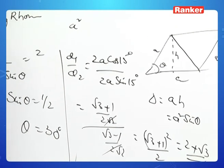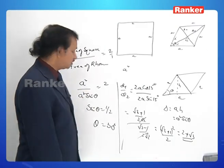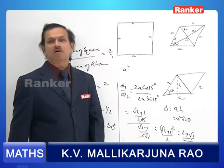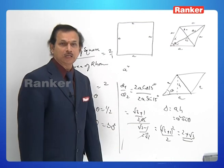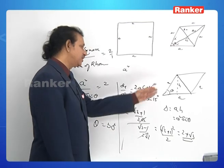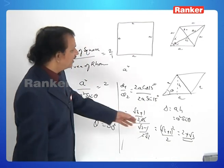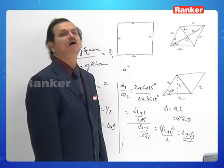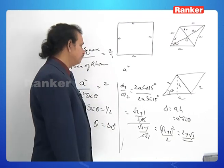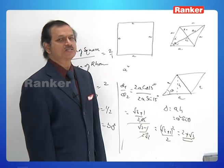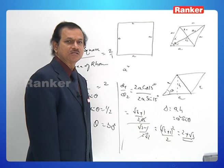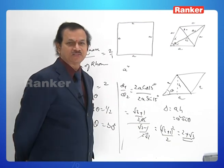This is a beautiful problem requiring knowledge of the diagonals of a rhombus, the area formula in terms of the angle between adjacent sides, and properties of the rhombus. The required ratio of the two diagonals is (2 + √3) : 1.